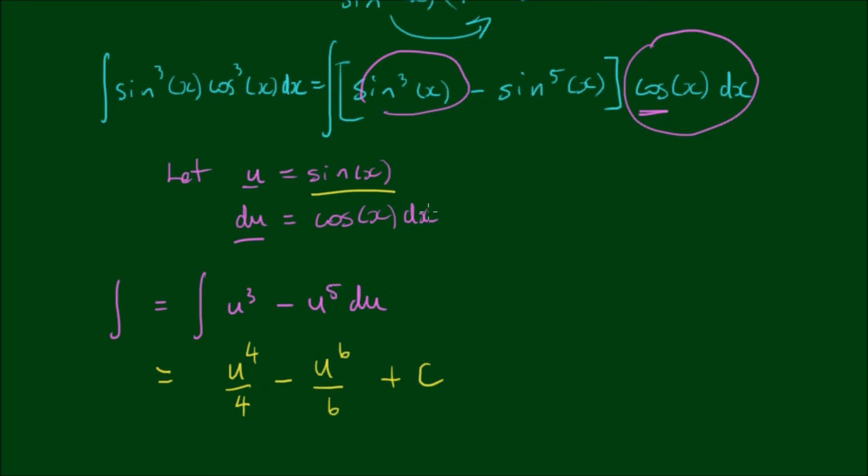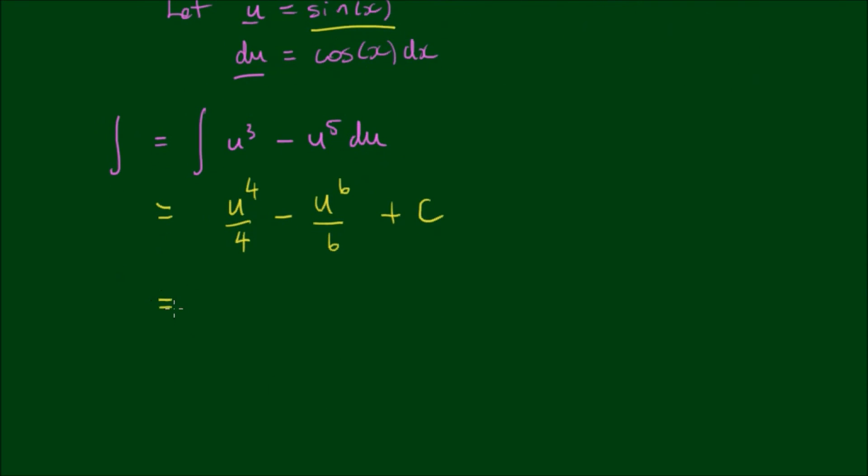And since we let u equal sin x, we substitute sin x back in. So we get sin to the fourth power of x on 4 minus sin to the sixth power of x on 6 plus c.